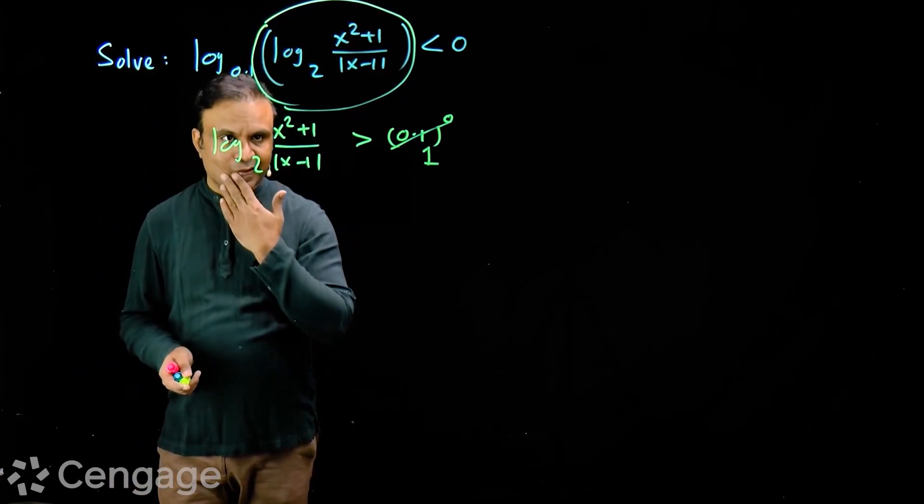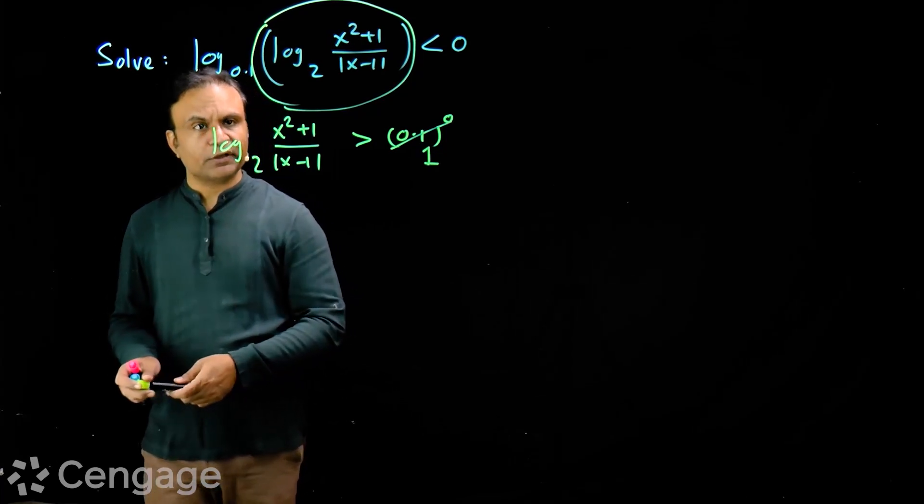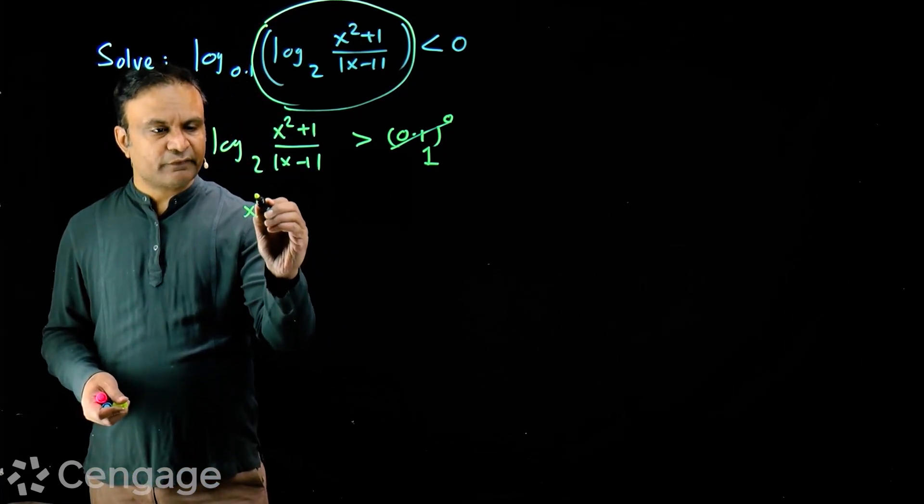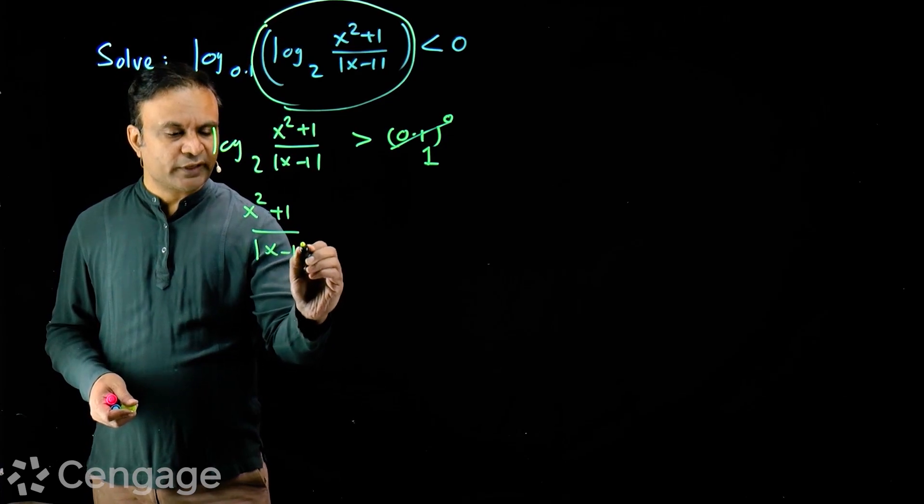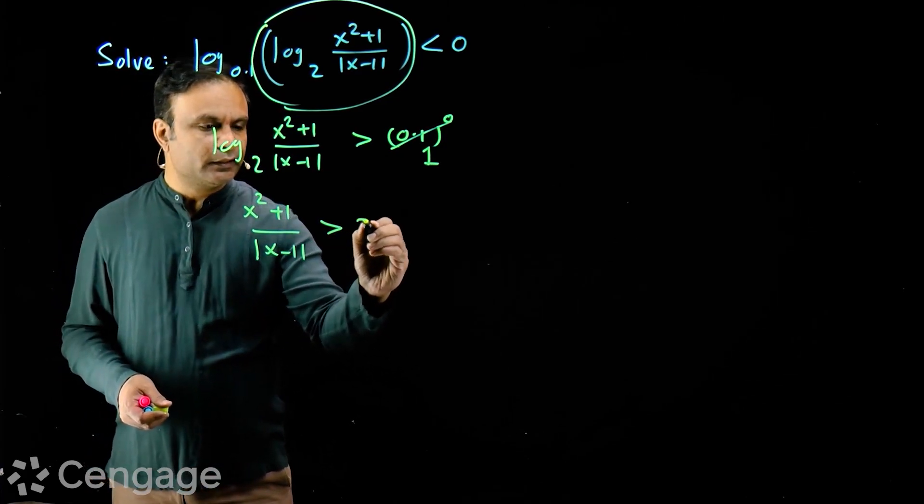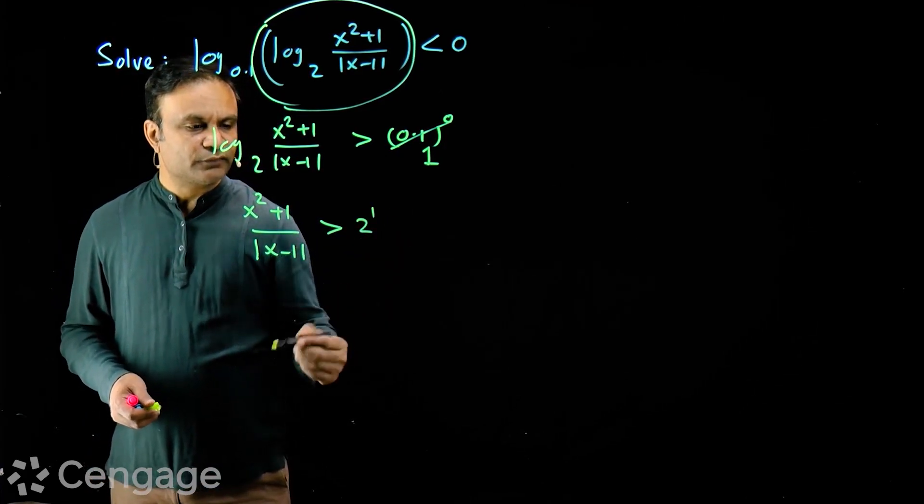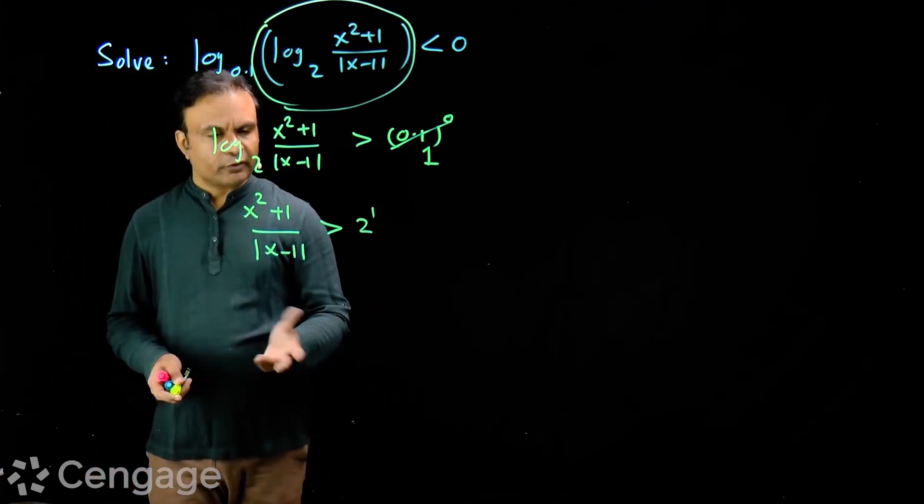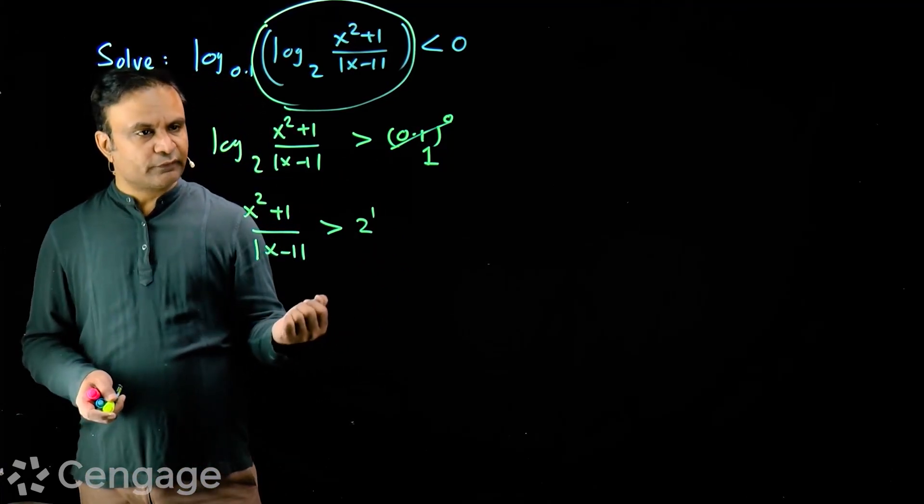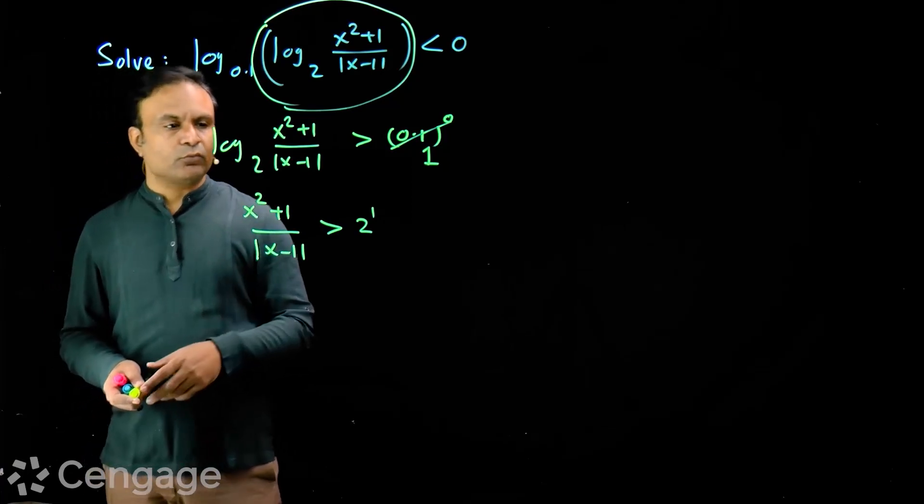Now we have this inequality in which base of logarithm is 2. So we have x square plus 1 upon mod x minus 1 greater than 2 power 1 which is 2. We are not changing the orientation of inequality because base is more than 1.